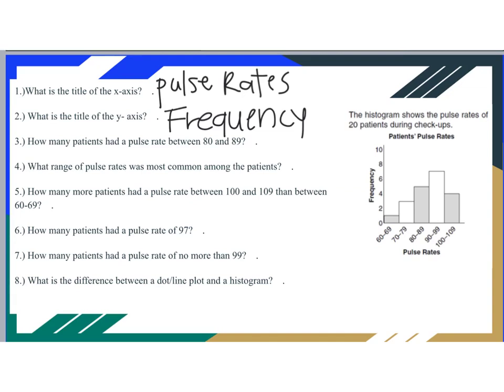How many patients had a pulse rate between 80 and 89? If we find the range 80 to 89 and follow it up to the y-axis, it lands right between 4 and 6, so that would be 5. That means 5 people had a pulse rate between 80 and 89. We don't know which exact numbers they are, but we know that 5 of them fit within that range.